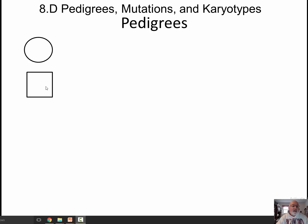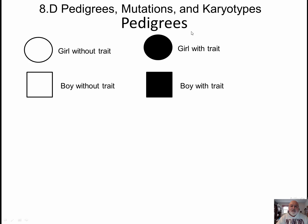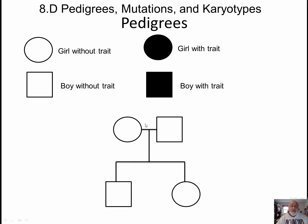The first thing we're going to talk about is pedigrees. The basic idea of a pedigree is so that we can follow generations of individuals — doesn't matter whether they're human, animal, plant, or fungus. We have some basic terminology: round circles are the female, and if it's an empty circle, it's without the trait. If it's an empty square, it's the boy without a trait. A filled circle is a girl with a trait, and a filled square is a boy with a trait. We can also show generations, where we have mom and dad, and we have the boy and the son.